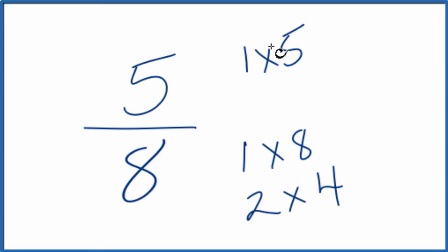And if you look at these here, the only thing that's common between these two numbers is 1. So our common multiple is 1, and that means that this is already simplified. We can't reduce 5 eighths down any further. It's just 5 over 8.